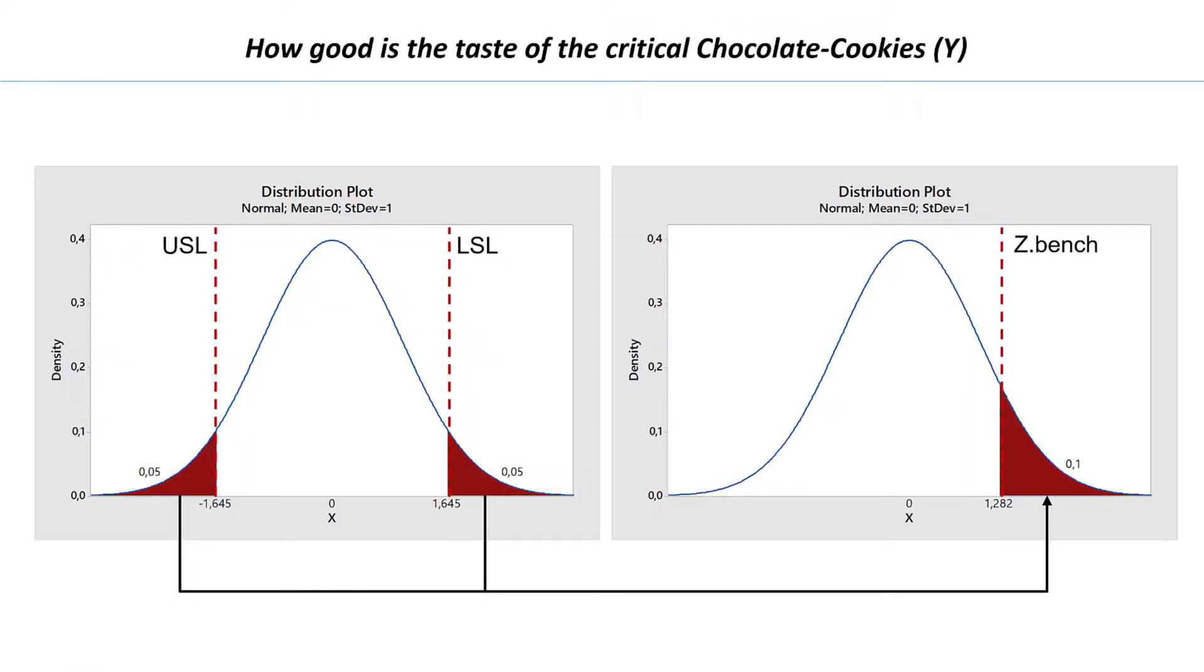Statistics programs like MINITAB calculate set bench values to estimate the sigma level. They are based on the normal distribution and convert cumulated percentage values of one side of the normal distribution into Z values and vice versa.